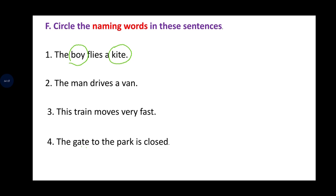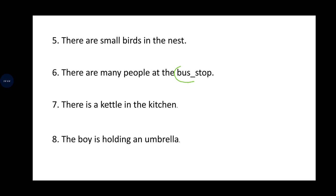Sentence two: 'The man drives a van.' Here, man and van are naming words. Number three: 'This train moves very fast.' Train is a naming word. Sentence four: 'The gate to the park is closed.' Gate is a thing, and park is a place, so gate and park are naming words. Sentence five: 'There are small birds in the nest.' Birds are animals and nest is a place, so birds and nest are naming words.